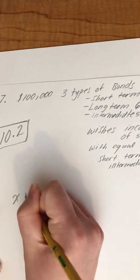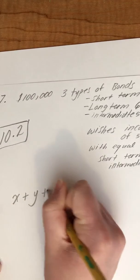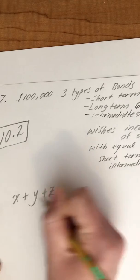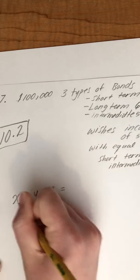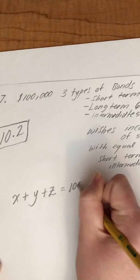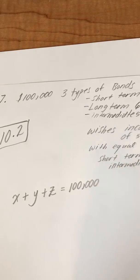X we'll call short-term, Y we'll call intermediate, and Z we'll call long-term. X, Y, Z, and that amount will add up to be $100,000. We're going to split up that $100,000 amongst those three things.